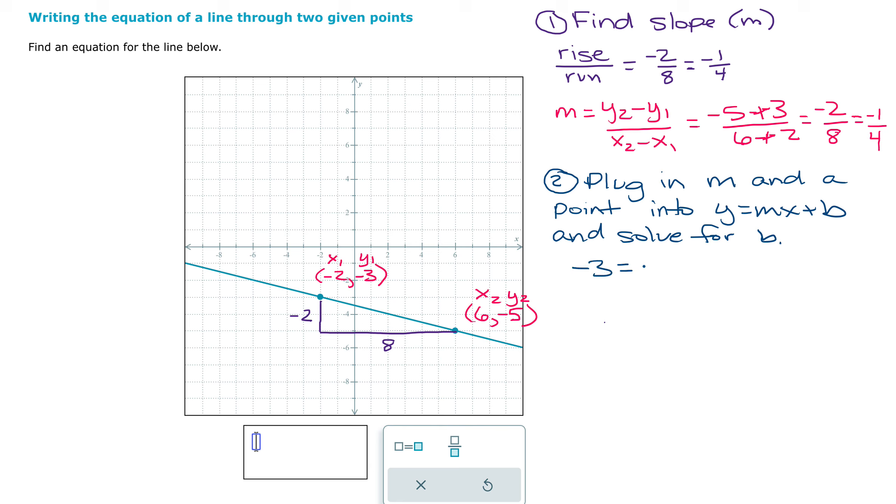I'm going to plug in the m that I found above, which is negative one-fourth. And I'm going to plug in my x, which is negative two. And then I'm solving for b. So this point here, I'm plugging in the x and y. I'm plugging in the slope from above. So now let's solve for b.